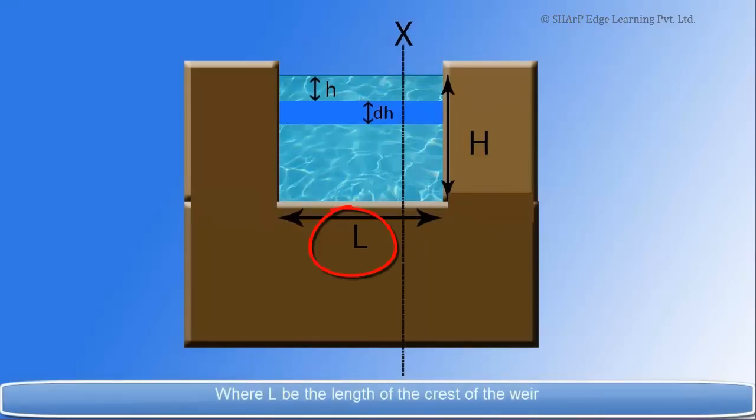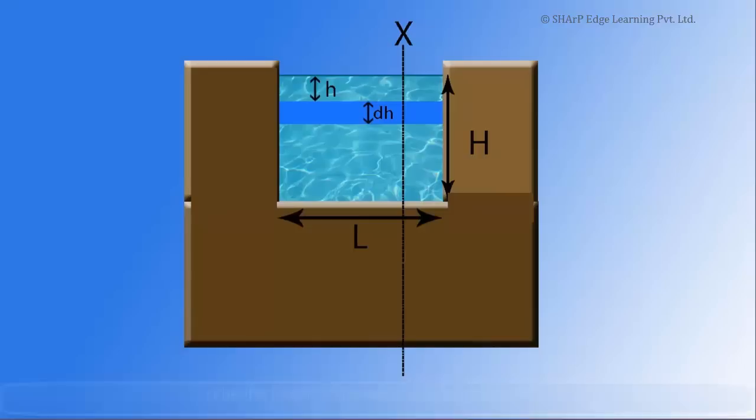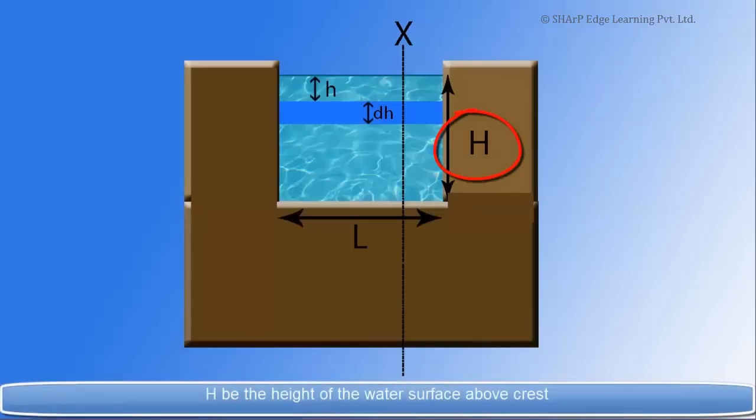Where L be the length of the crest of the weir. H be the height of the water's surface above crest.